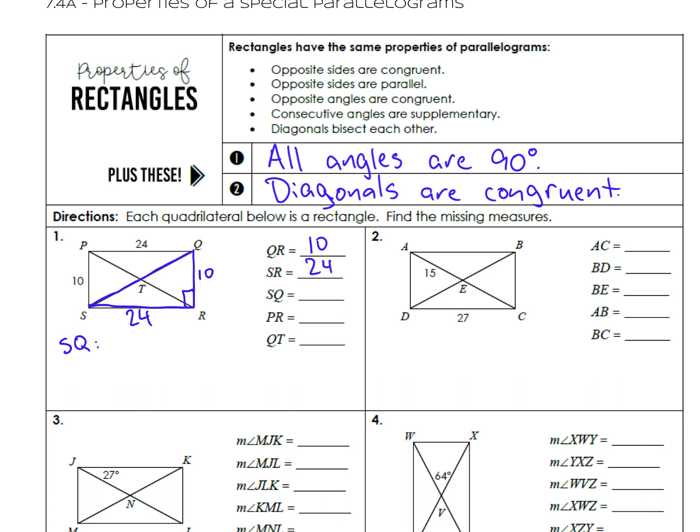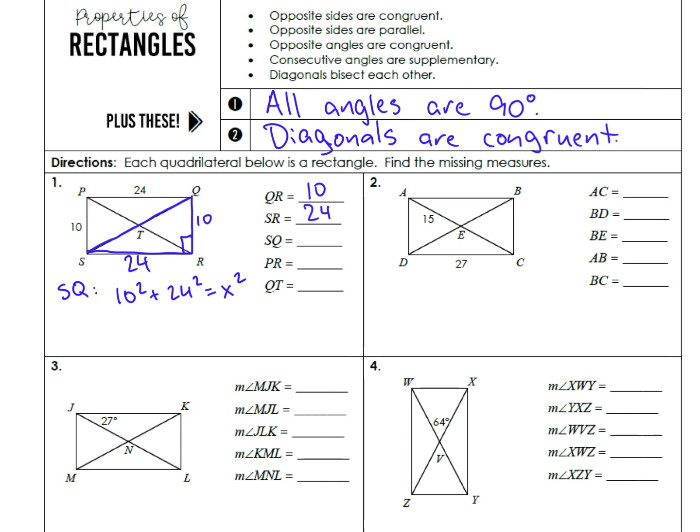We're trying to find the hypotenuse and we have the two legs, which means we are going to use Pythagorean theorem. Since SQ is the hypotenuse, that means X is going to be all alone. The two legs here are 10 squared and 24 squared. And what's nice about doing this work is you can simply write this as X equals the square root of all that stuff added together, 676.